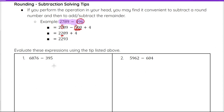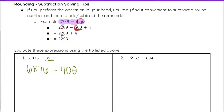So we can try these examples here. 6876 minus 395. 395 is pretty close to 400 — it's 5 away. So what I'm going to do is 6876 minus 400. But if I subtract 400, I subtracted an extra 5, so I need to add 5 back in to compensate for that extra 5 I took away by doing minus 400.